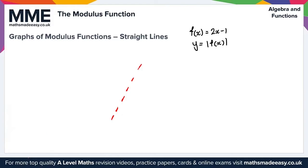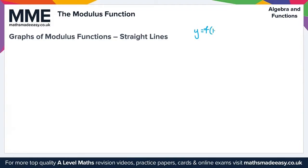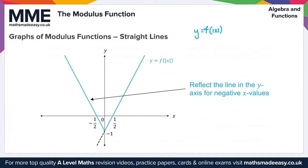For y equals f of the modulus of x with the same function, we again plot y equals f(x) first, then reflect the line in the y-axis for negative x values, giving a V-shaped graph.